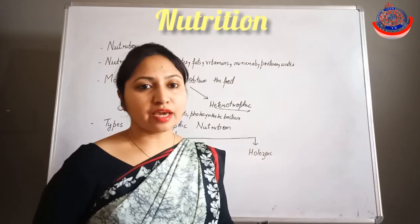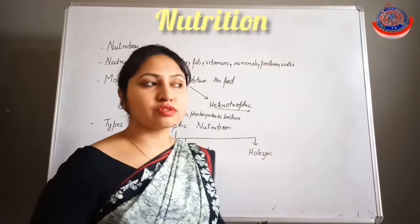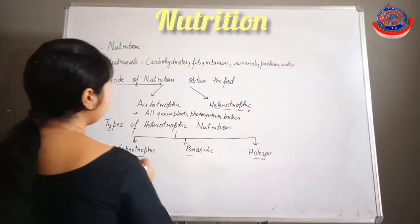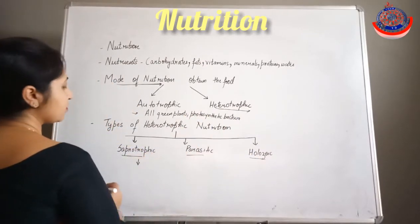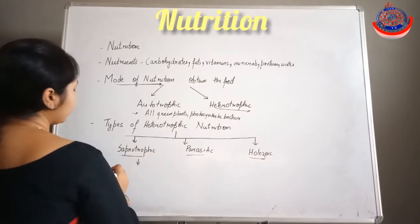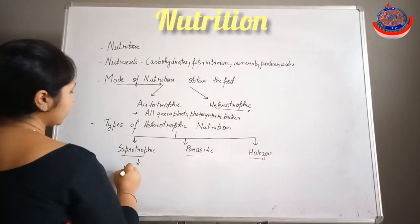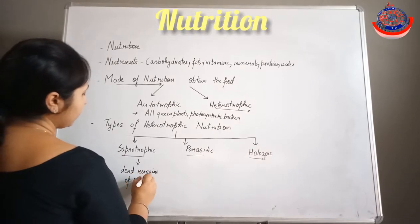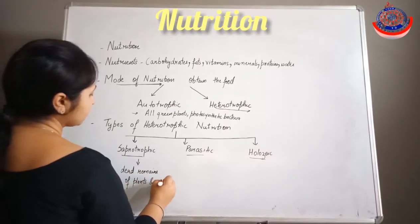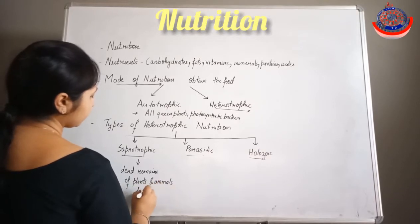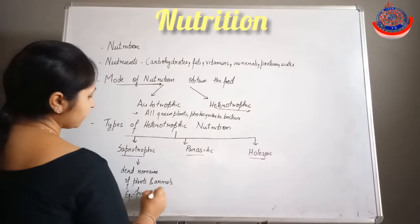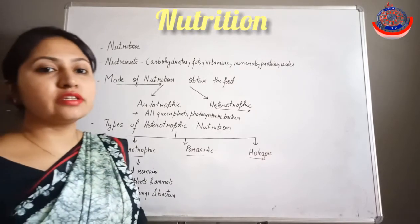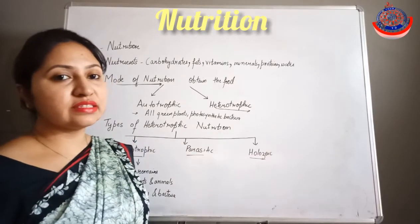There are various types of heterotrophic nutrition. The important types are saprotrophic, parasitic, and holozoic. Saprotrophic nutrition includes saprotrophs, which obtain their food from dead remains of plants and animals. Examples include fungi and bacteria. Fungi includes bread molds, mushroom, yeast, etc.